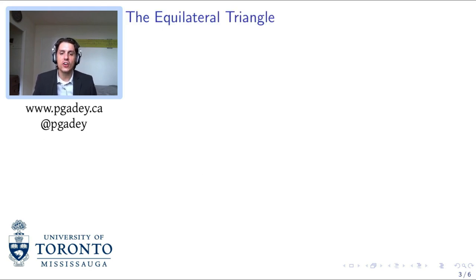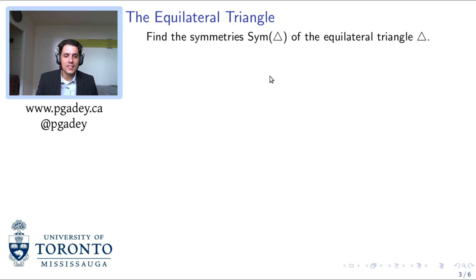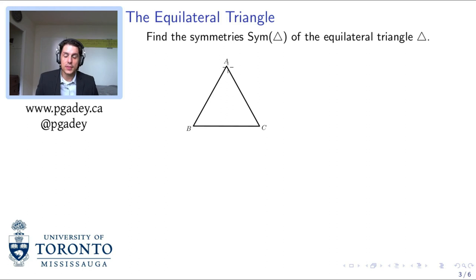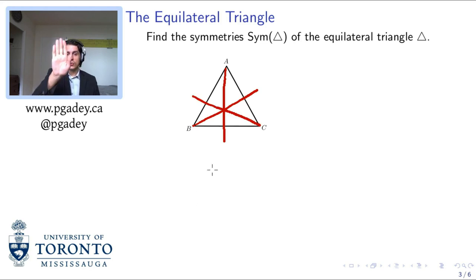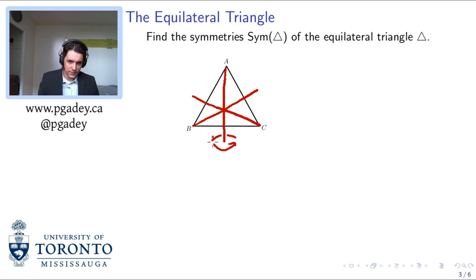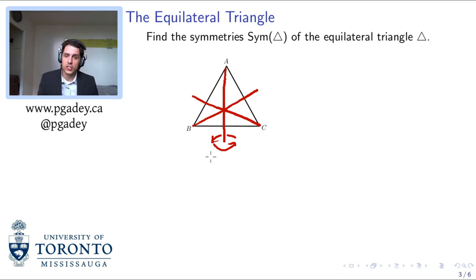Now we're going to look at the collection of isometries of a particular object, and those are going to be the symmetries of that object. We'll find the symmetries of the equilateral triangle. Here's our favorite triangle. Let's add in some of the symmetries: we can flip it across the vertical axis, we can flip it across the axis through B, and we can flip it across the axis through C. Notice that all of those flips are mirror reflections — they reflect across a line. We can think of that as being a 180-degree rotation in R^3, or as a reflection in the plane.